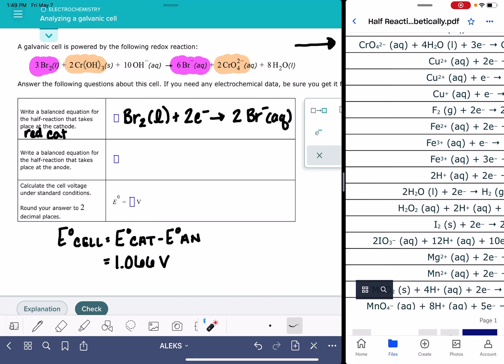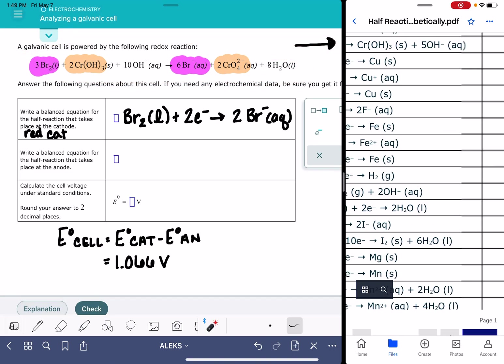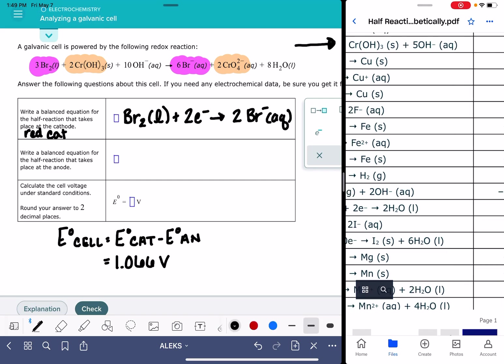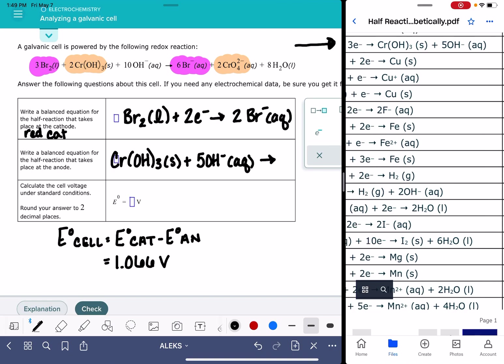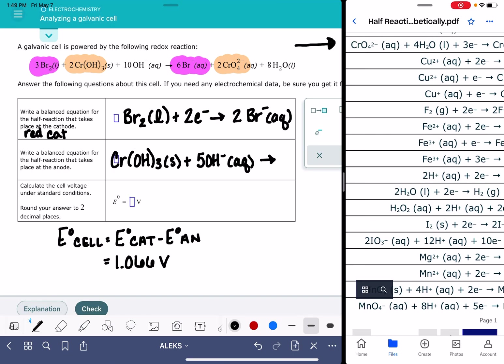Again, stoichiometric coefficients are not exactly the same, but that's okay. Now before we copy this equation down into this box, remember that on the table, it is written as a reduction, but in our situation, it's taking place as an oxidation, which means we want to copy it in reverse of what's in this Alex table. We want CrOH3 solid on the left-hand side, not on the right-hand side. 5OH- aqueous, which makes our products CrO42- aqueous plus 4H2O liquid plus 3 electrons.